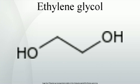Ethylene glycol is an organic compound primarily used as a raw material in the manufacture of polyester fibers and fabric industry, and polyethylene terephthalate resins used in bottling. A small percent is also used in industrial applications like antifreeze formulations and other industrial products. It is an odorless, colorless, syrupy, sweet-tasting liquid.